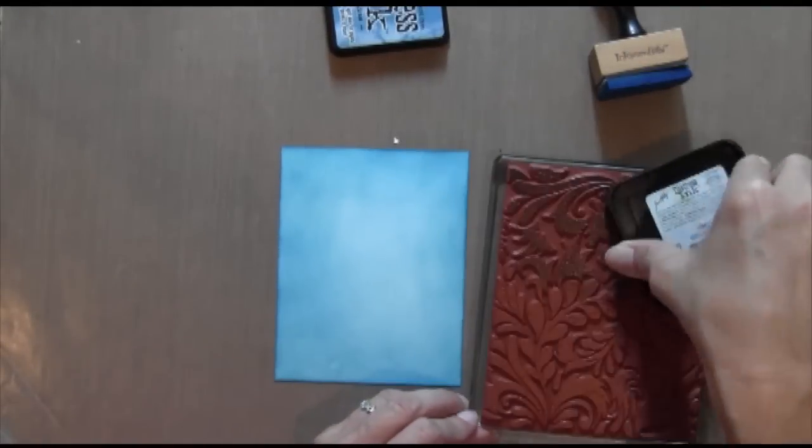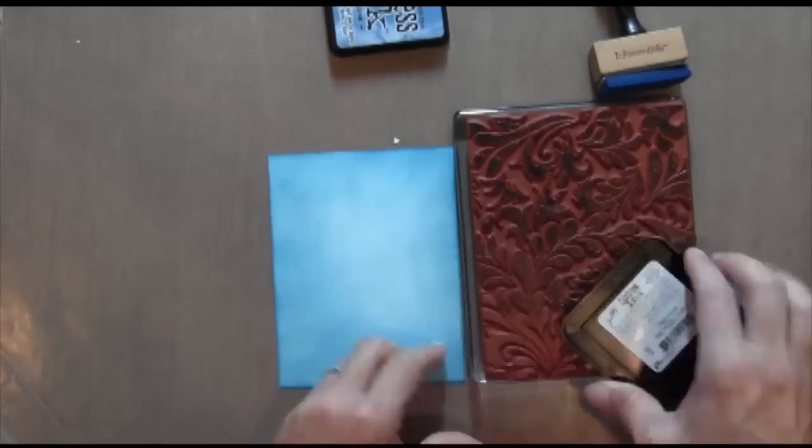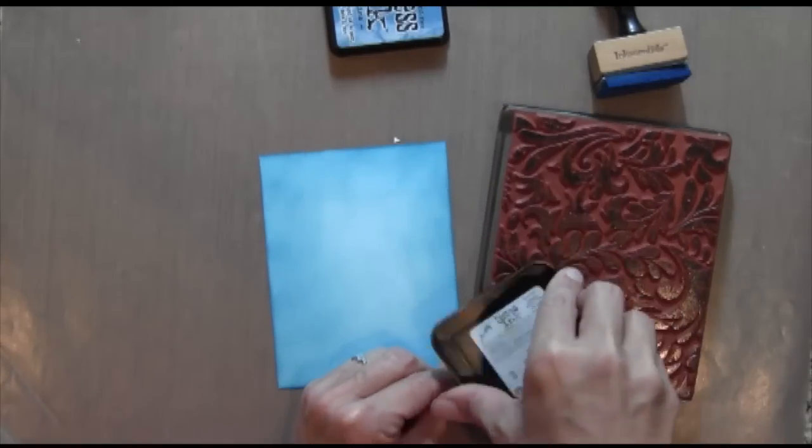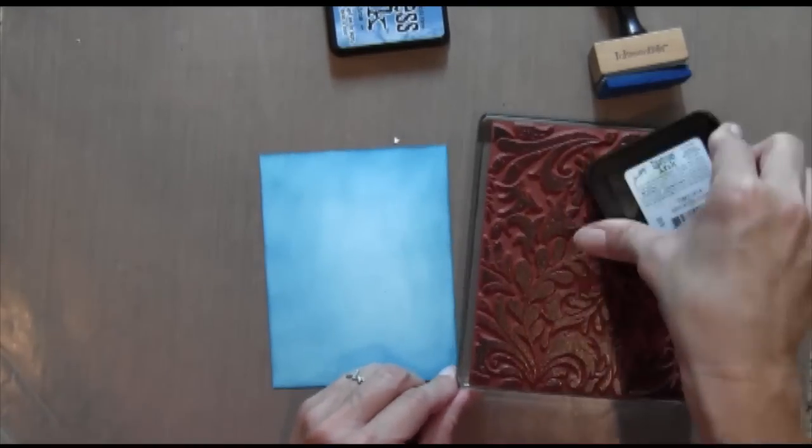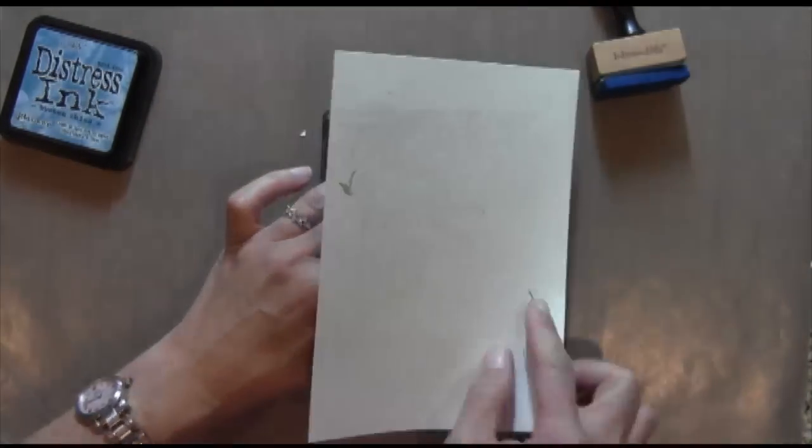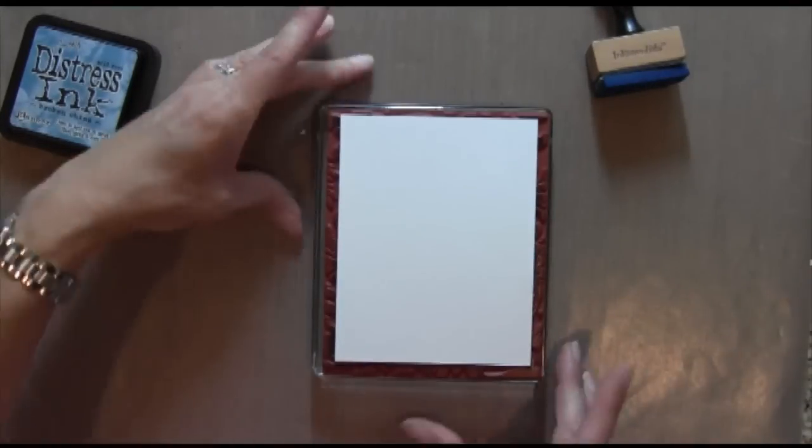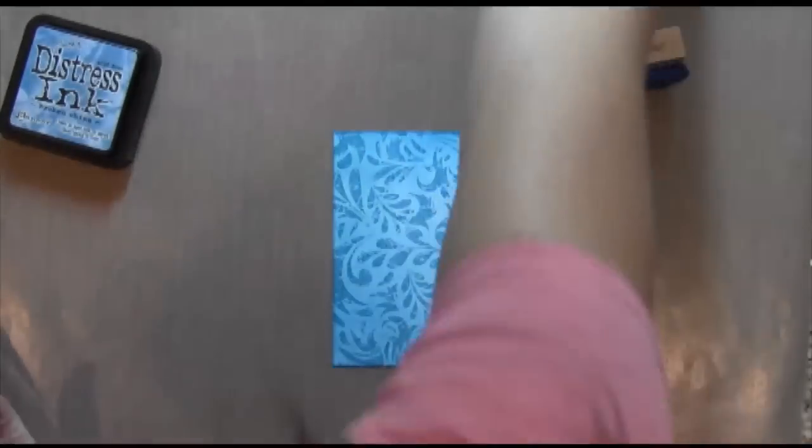Alright, I've got this new swirl set, I can't remember the name, I'll put on my blog, from Hero Arts. Such a pretty stamp. And I'm inking that up with Broken China, the same ink I just used. And I like to stamp my background stamps upside down, just because it's easier. It came out really pretty.